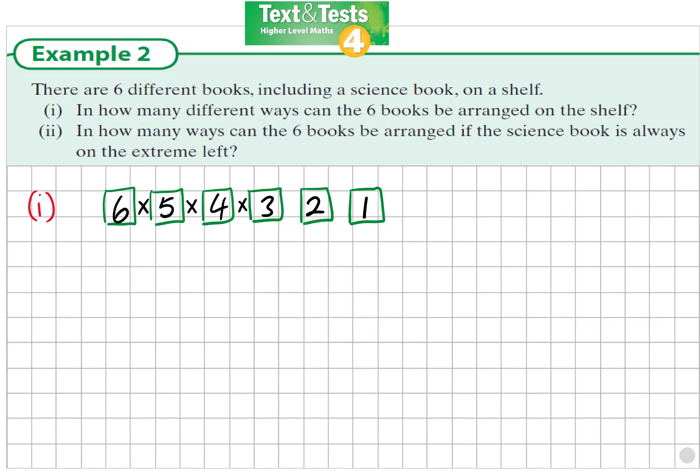The fundamental principle of counting says if we multiply our options at each choice we have to make, we'll get the total number of options. So we would multiply six by five by four by three by two by one and that would be 720.